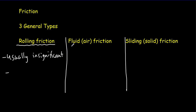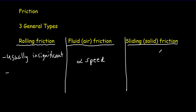The second is fluid friction — usually that means air friction for us. What's significant about air friction is that it varies with speed. When you stick your hand out of a car window moving really fast, you experience a lot of air resistance because your hand is moving quickly through the air. And the topic of this video is sliding friction, which occurs when we have surfaces rubbing against each other and an object moving across that surface.